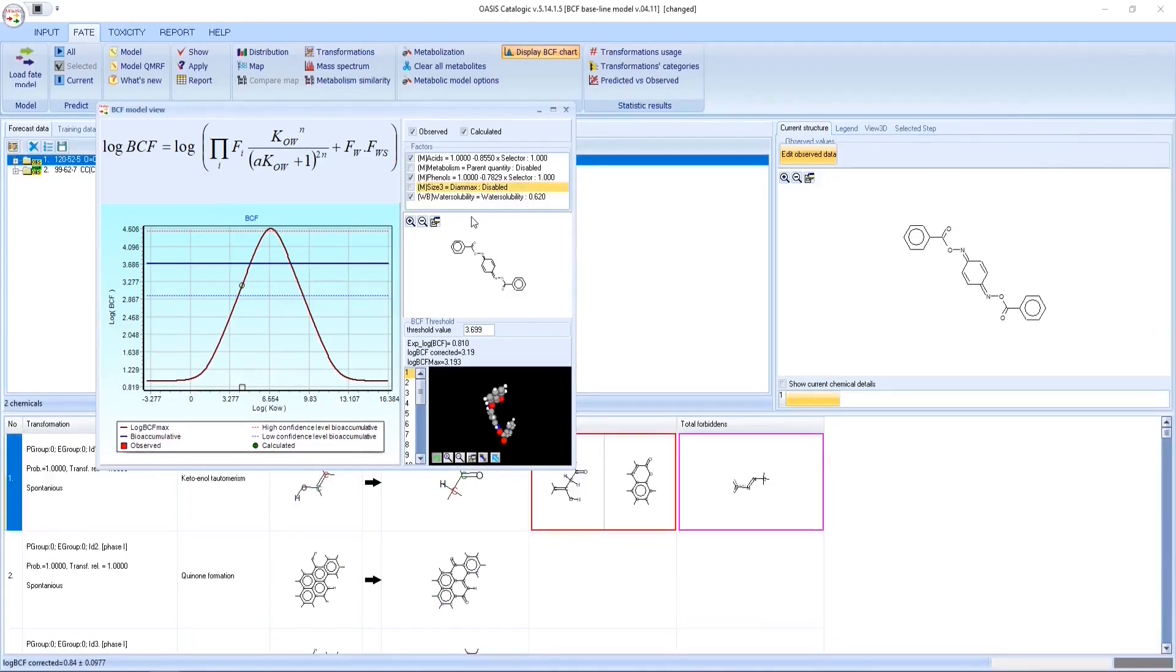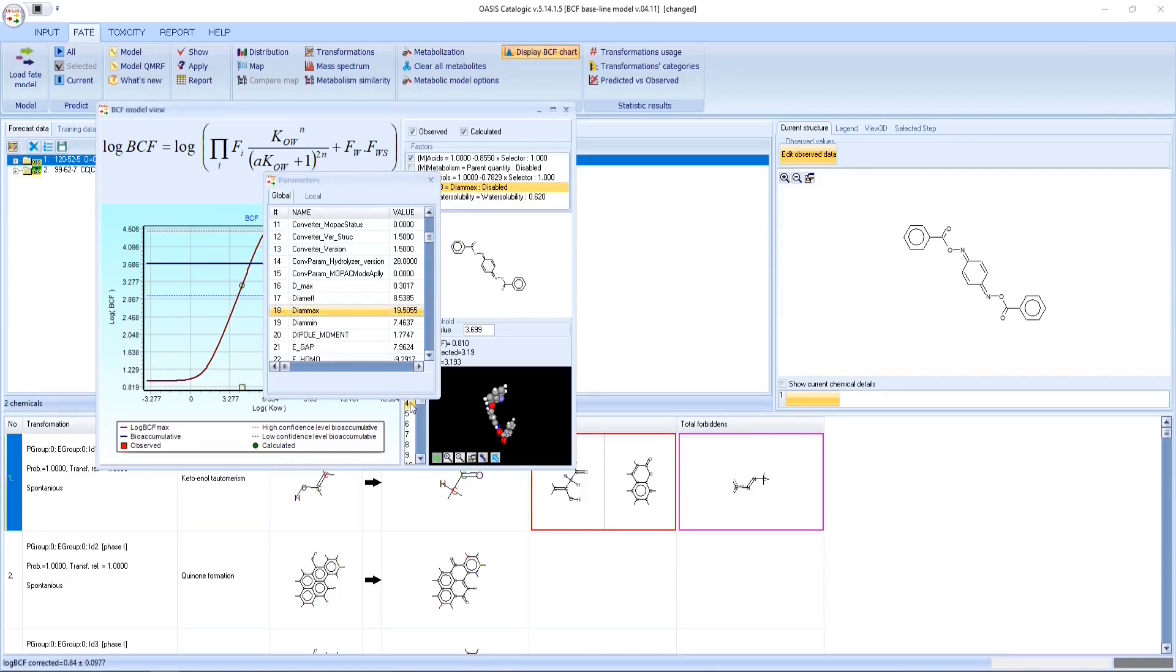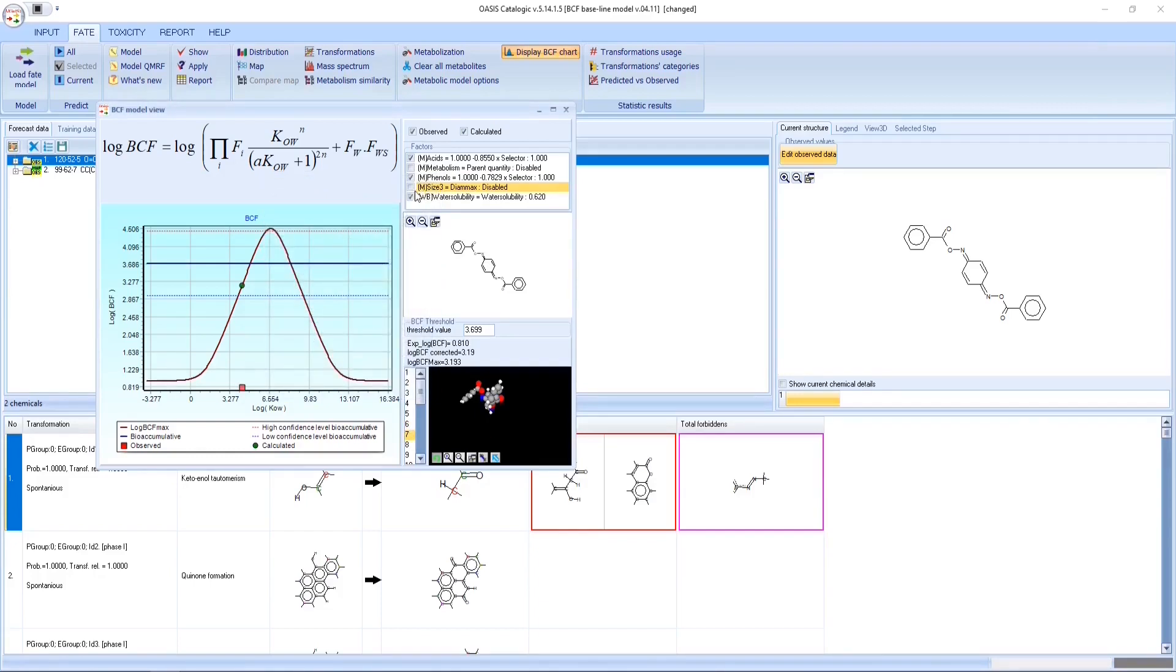Let's check the effect of molecular size. The genetic algorithm, implemented in CATALOGIC, allows generation of a limited number of conformers, which are optimized by quantum chemical calculations. The molecular size of a chemical is defined by taking into account the average maximum diameter across all conformers.